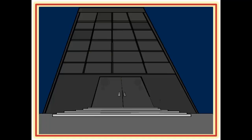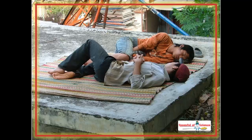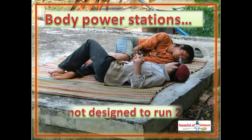But power outages don't just happen to the national grid. Your body's power grid is also subject to failure, because your body's power stations are not designed to run 24-7.